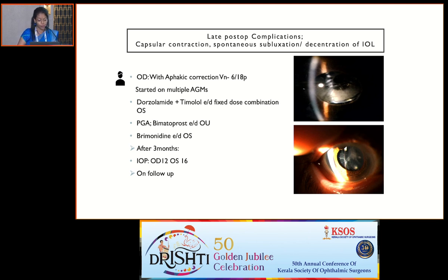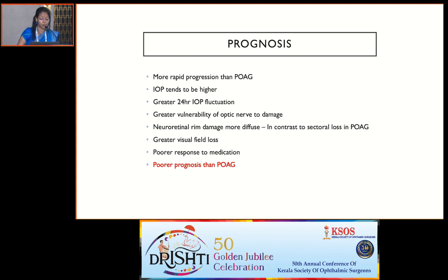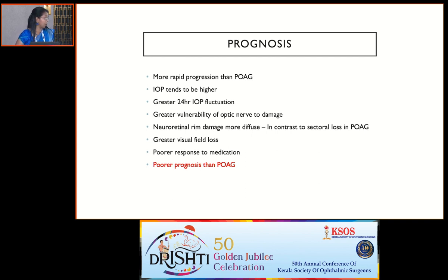Overall, the prognosis is poor — there is very rapid progression compared to POAG. Mean IOP tends to be higher with greater 24-hour IOP fluctuations. There is greater vulnerability of the optic nerve to damage, and neuroretinal rim damage is more diffuse in contrast to the sector loss seen in POAG, with greater visual field loss and poor response to medication.